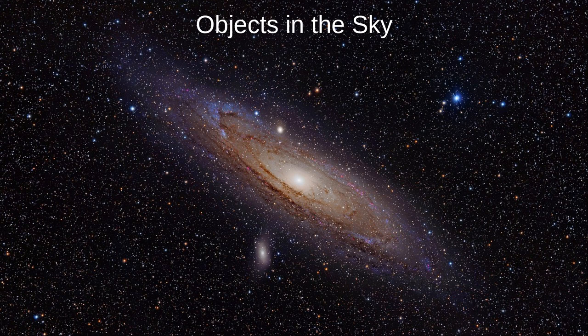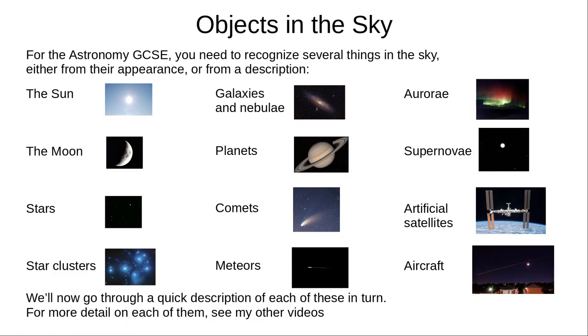Hello and welcome to Astronomy with Mr Gerin. In this first video on objects in the sky, we're going to look at some of the most common things we see in the sky. We'll learn what they are and how to identify them. In the second video, we'll look at some popular constellations and asterisms, as well as how to use these to find famous astronomical objects. For each of these objects, you need to be able to write a sentence to describe them or identify their name from a description.